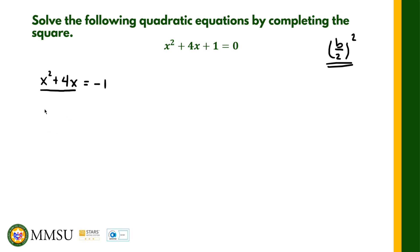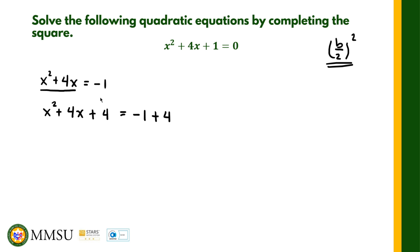The equation becomes x² + 4x + 4 = −1 + 4. Whatever we added to the left side of the equation must also be added to the right side. The left side is now a perfect square and can be factored as (x + 2)².